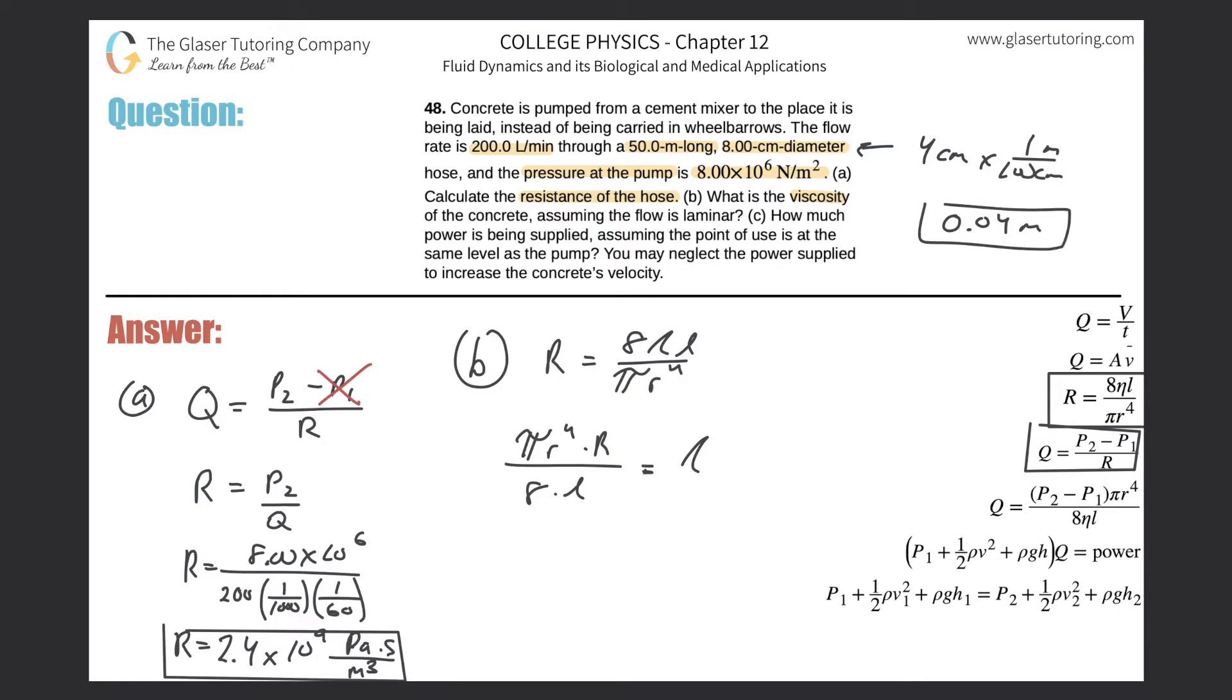And now we can plug everything in. So now here we have π multiplied by that radius 0.04, that's raised to the fourth power, multiplied by the R value we just found, which is 2.4×10⁹, all divided by 8 now times the length which was 50. And that's going to equal the viscosity.